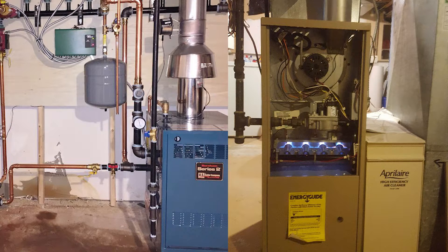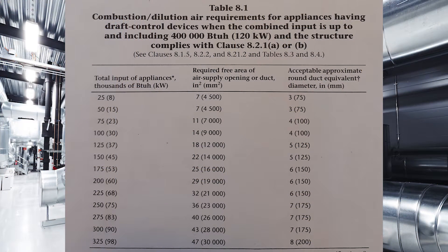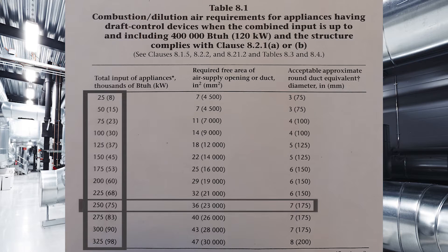My example will be a 250,000 BTU drafthood equipped boiler and a 100,000 BTU fan-assisted furnace together. We begin at table 8-1 with drafthood equipped appliances only. The total on that is 250,000 BTUs, so we go down to 250 on the left-hand column, come across to the right, and we need a 7-inch round air supply. We'll jot that down to reference later.